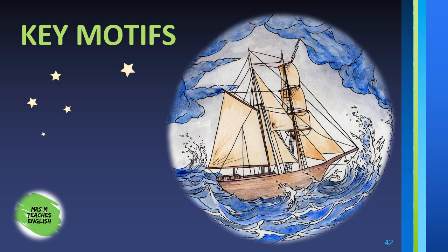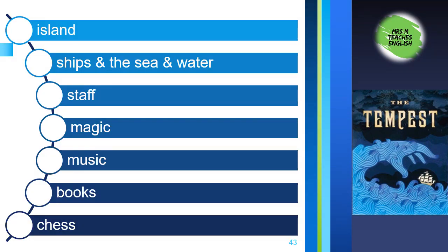By now you know that writers use key motifs and symbols to reinforce their themes. In The Tempest, you'll find plenty of references to these motifs and symbols: the island, ships, the sea, water, Prospero's staff, magic, music, books, and even chess. At the end of the play, when we see Miranda and Ferdinand playing a game of chess, we realise that every move has been plotted by Prospero with the care and attention paid to the board game by the grand masters of chess.